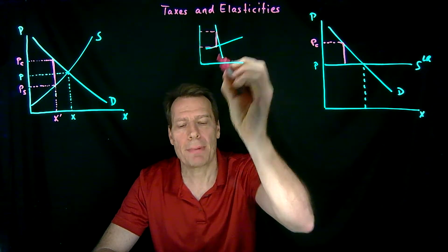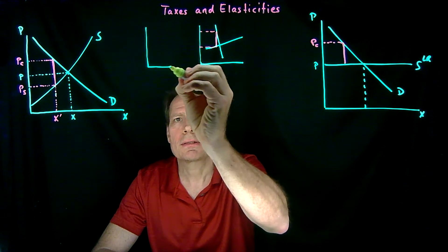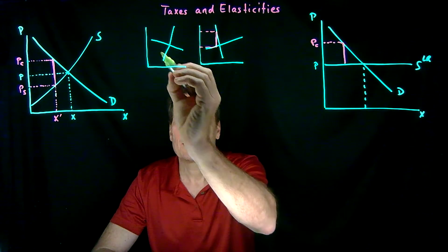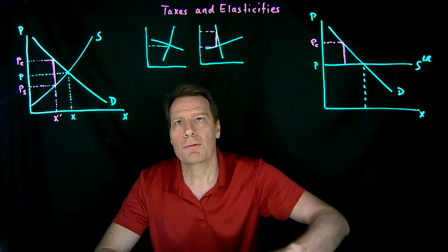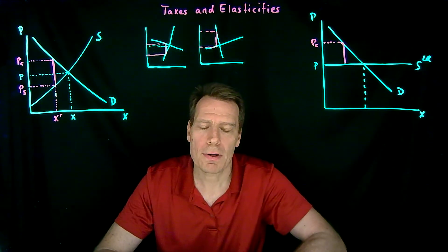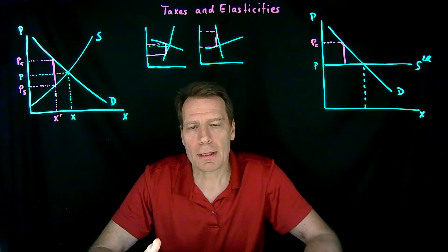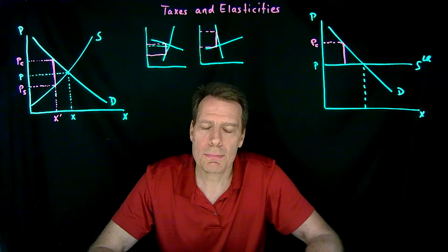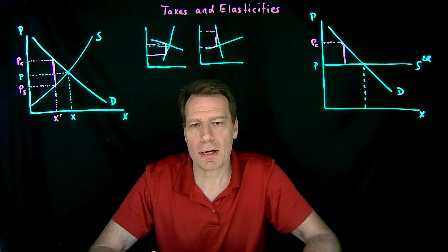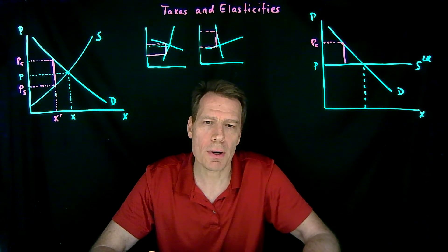In a case like that, if we put that tax wedge in, consumer prices are going to go up by a lot, but the seller's prices are going to fall by a little. Or you could draw another one with the opposite — a relatively steep supply curve and a relatively shallow demand curve. In that case, the seller's price goes down by a lot, but the consumer price doesn't go up by very much at all. So the burden of the tax is going to be disproportionately borne by the side of the market that's relatively more inelastic. It's easier to pass the burden of a tax to the side of the market that isn't responsive to price changes.